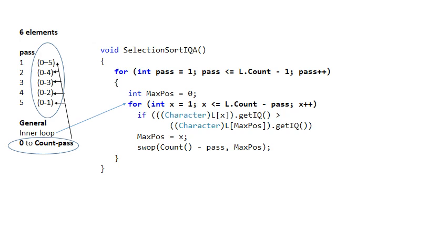Notice the inner loop says for int x is assigned to one, and it goes up to L dot count minus pass. So that describes the use of the inner loop in the selection sort.